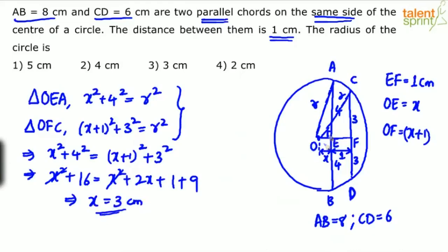We know that X is 3 centimeters, but what is needed? The radius of the circle. Substitute the value of X in the first equation. X squared plus 4 squared equals R squared, which implies 3 squared plus 4 squared is R squared. So R will be equal to 5.